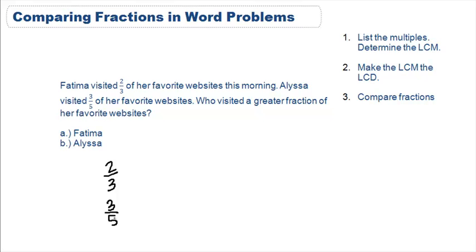Step number one says list the multiples to determine the lowest common multiple. So we're going to find the multiples of the denominators, which is three and five.